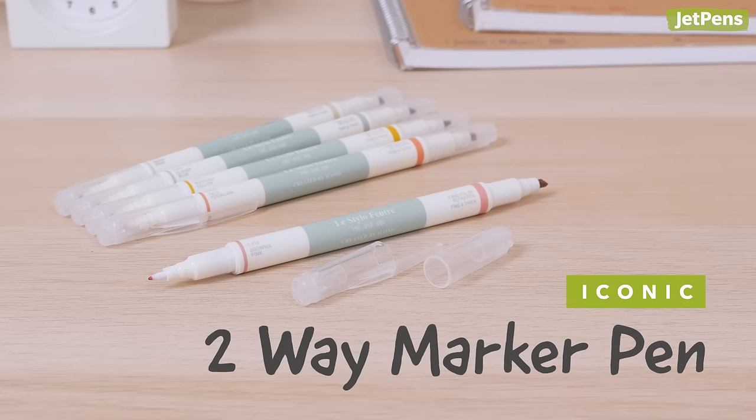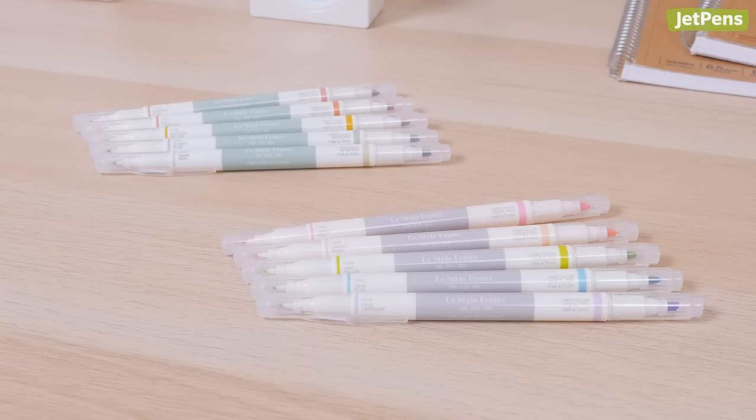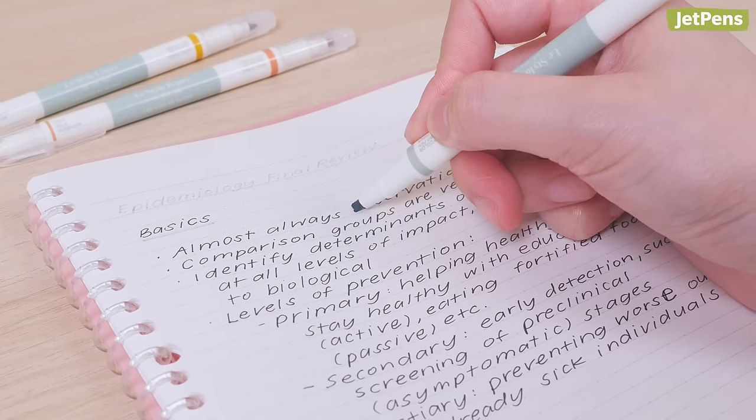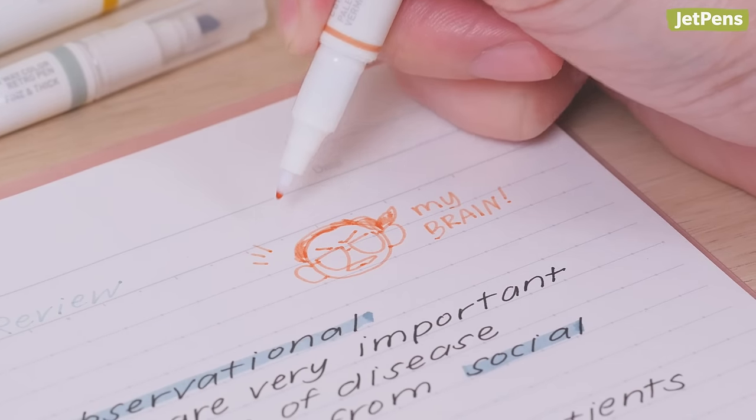For a softer color option, go with the double-sided iconic two-way marker pens. We love that they come in sets of coordinating colors. They don't smear over most pens, and you can use a fine bullet tip for doodling or underlining.